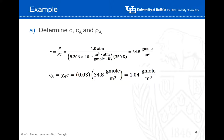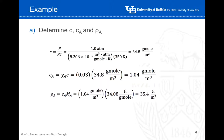Once we know the total concentration, we can also calculate the concentration of A, hydrogen sulfide. It is straightforward: we multiply the molar fraction by the total concentration. So the concentration of hydrogen sulfide is 1.04 mol per cubic meter. Finally, the density of hydrogen sulfide is calculated by multiplying the concentration of A by the molecular weight of H₂S. The result is 35.4 grams per cubic meter. Section A is now solved.